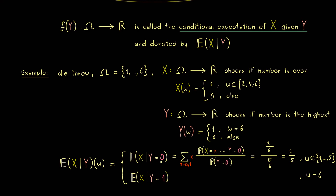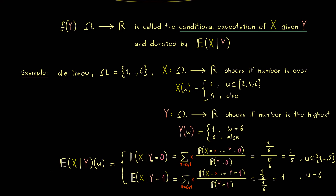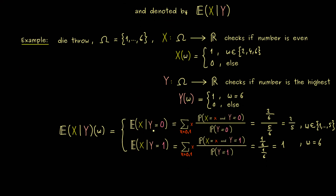Now for the case Y=1: we still sum over x=0 and x=1. For X=1 with Y=1, the only outcome is ω=6, so the numerator and denominator of the conditional probability are the same, giving result 1. So this conditional expectation captures both cases Y=0 and Y=1 — it takes the idea that we don't know the exact outcome of Y and puts that uncertainty into a random variable.